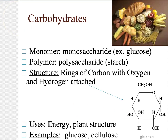The first macromolecule we'll be talking about is carbohydrates. The monomer, or the single unit of a carbohydrate, is called a monosaccharide. When you see the word saccharide, that just means sugar. So a carbohydrate is a type of sugar or starch. Mono means one, so monosaccharide means one sugar. An example would be glucose. The polymer of carbohydrates is called a polysaccharide — poly means several — so several sugars linked together, which would be a starch, a larger sugar compound.